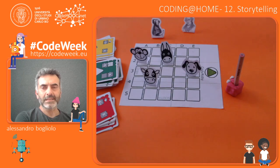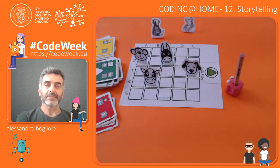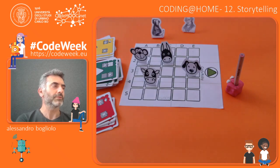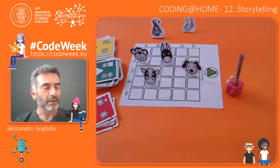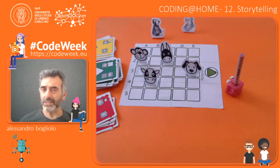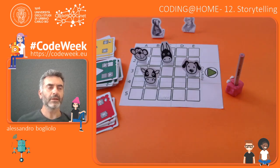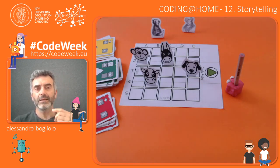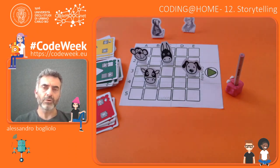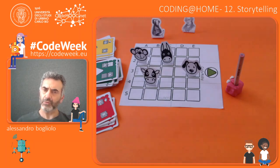As you can see, on the checkered board I placed some characters. Those are animals — there is a dog, a donkey, a cow, and a monkey. Imagine that I want to tell you a story that involves all these characters, and in my mind I know in which order the characters are to be introduced in the story in order to make sense out of it.